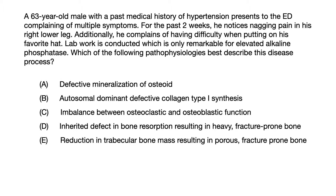Lab work is conducted which is only remarkable for elevated alkaline phosphatase. Which of the following pathophysiologies best describes this disease process? A. Defective mineralization of osteoid. B. Autosomal dominant defective collagen type 1 synthesis. C. Imbalance between osteoclastic and osteoblastic function. D. Inherited defect in bone resorption resulting in heavy fracture prone bone. Or E. Reduction in trabecular bone mass resulting in porous fracture prone bone.